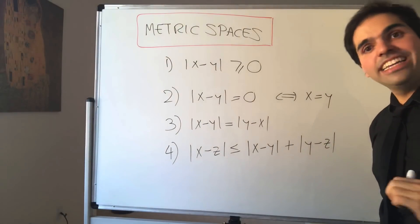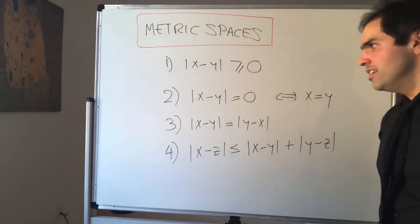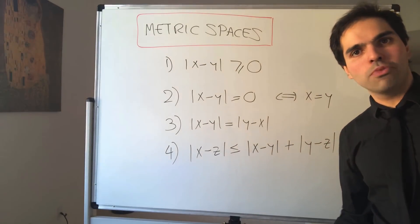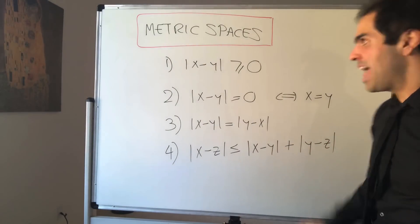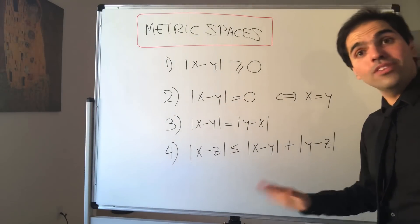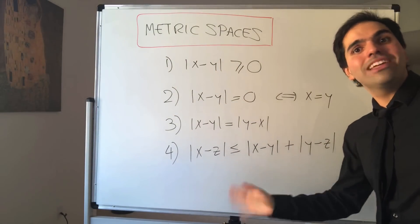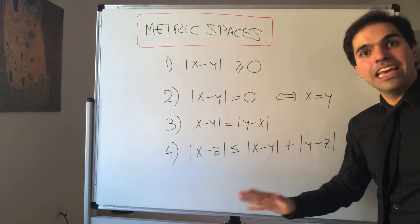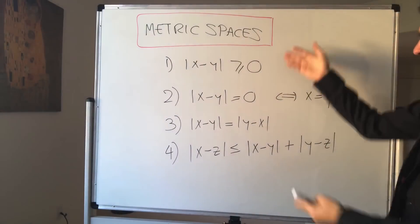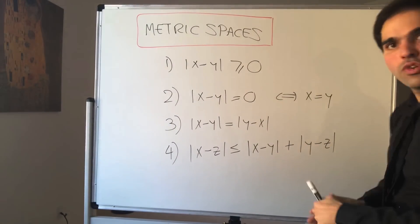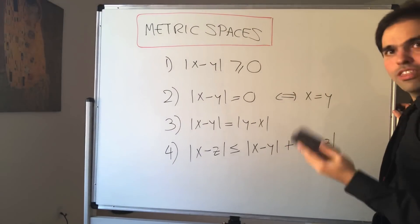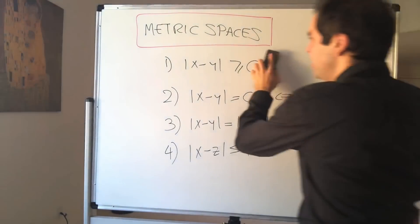Now, what's the idea behind a metric space? Suppose we forget everything about the real numbers — like in the Matrix — except for those four properties. It turns out the structure we get, which is called a metric space, isn't so different from the real numbers after all, which really shows that those four properties are the essence of the real numbers. So now, without further ado, let me define a metric space.